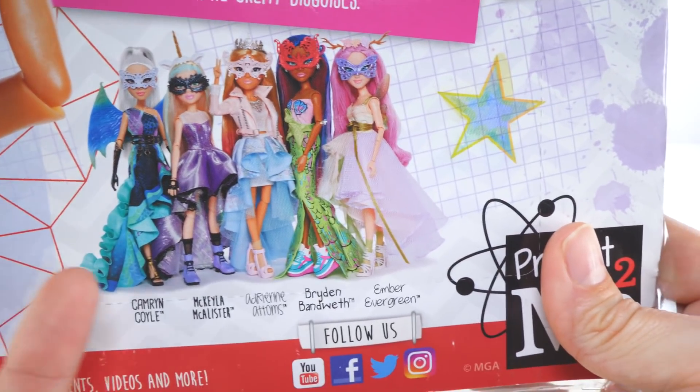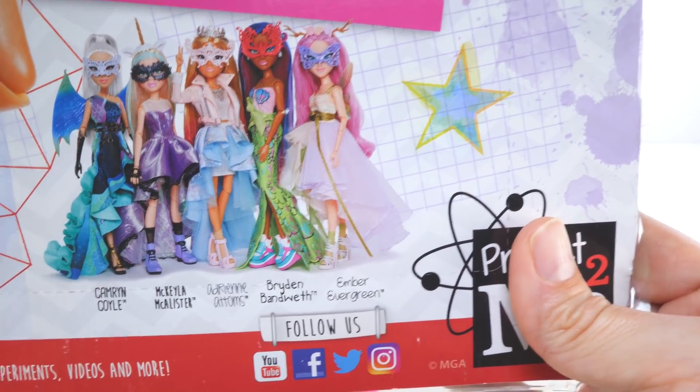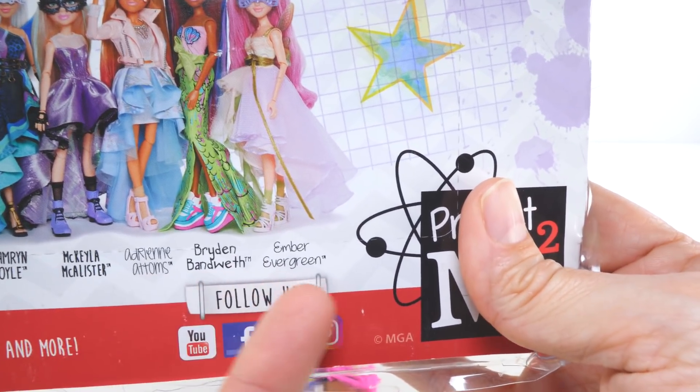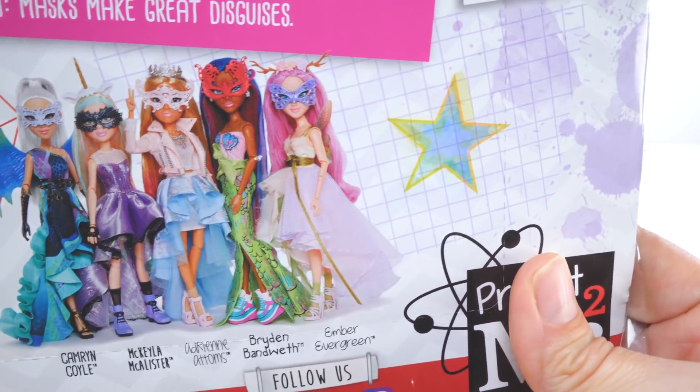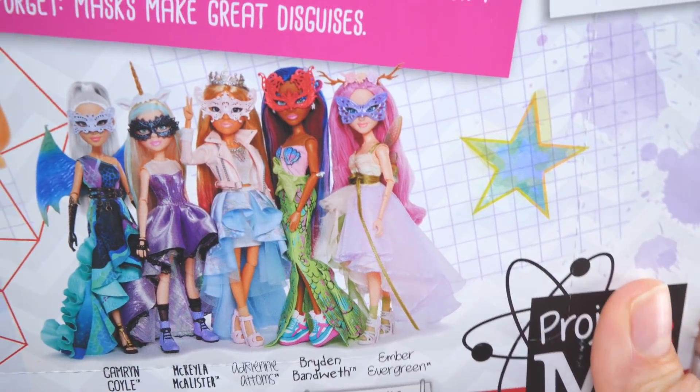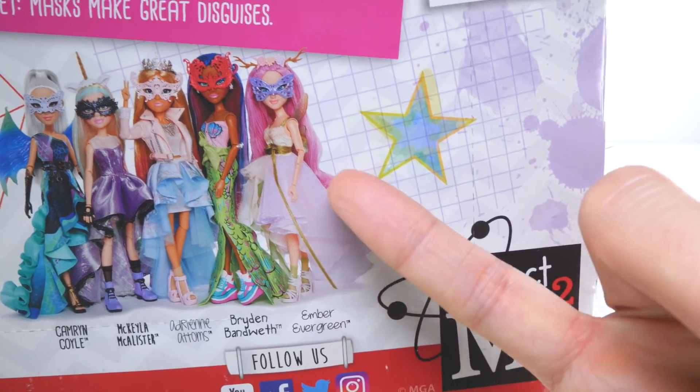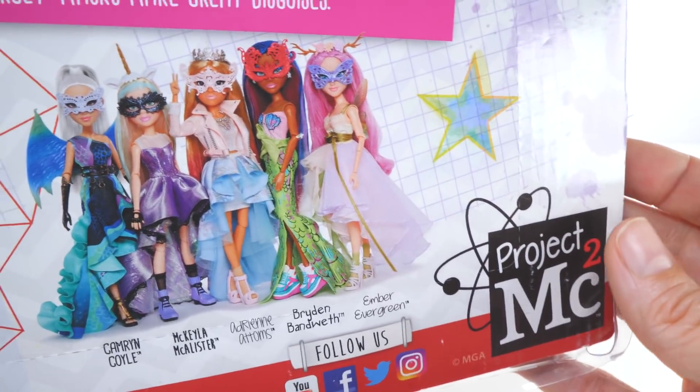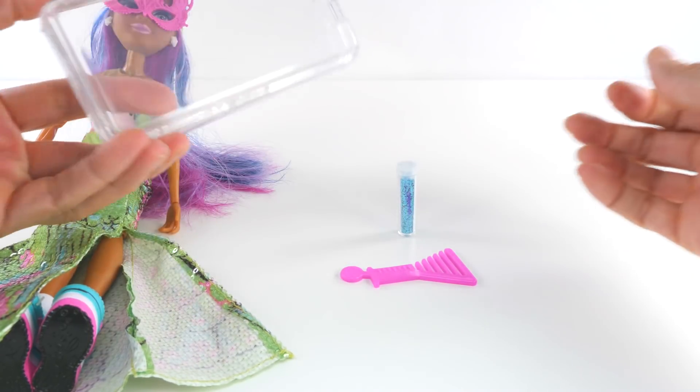This is from the back of the box, so this is what everybody else wore. Oh look at Mikayla, she looks cool. See what everybody wore? It's like everybody has a mask. I like Bryden's mask the best. Trying to see which outfit I like... I don't know, I like Ember's outfit a lot. They all look good.